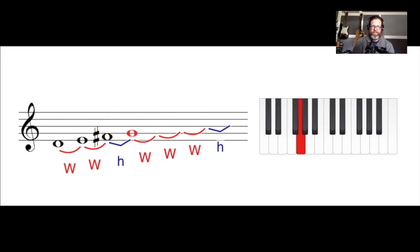G to A is good, A to B is good. B to C natural is a half step, so we just have to raise that C to a C-sharp, and we're back to home again.